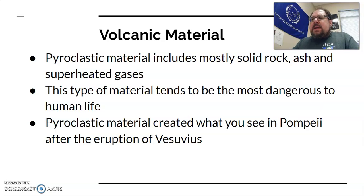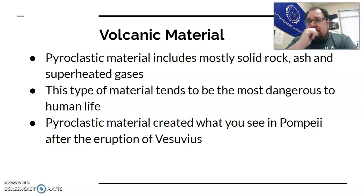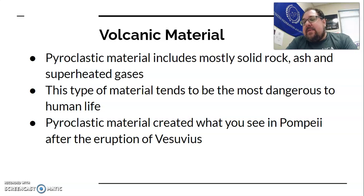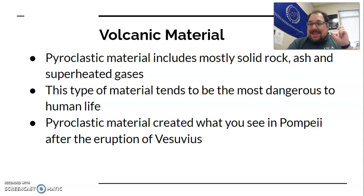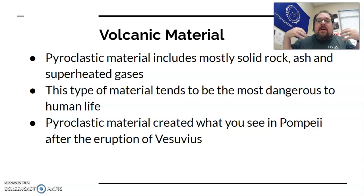The most dangerous volcanic material to humans is usually what's called pyroclastic material. Pyroclastic material is not lava — it is superheated ash, gas, and solid rock. If you see a massive volcanic eruption, that big gray cloud moving down the side of a mountain is pyroclastic material. If you breathe it in, it is literally like breathing burning fiberglass. Under a microscope, volcanic ash looks like shards of glass — because that's exactly what it is — shards of volcanic glass that are very bad for your lungs.